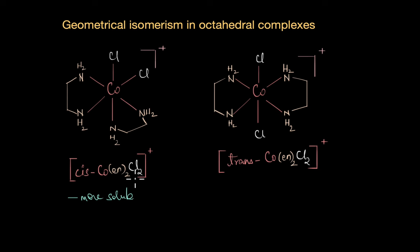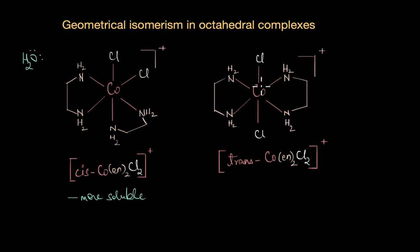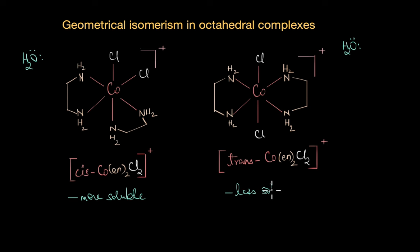In the cis isomer, the chloride ligands are adjacent to each other, and this increases the polarity of the molecule, meaning it can interact more effectively with polar solvents like water. On the other hand, in the trans isomer, the chloride ions are placed opposite to each other, the dipole moments cancel out, decreasing the overall polarity. This decreased polarity means the trans isomer is generally less soluble.